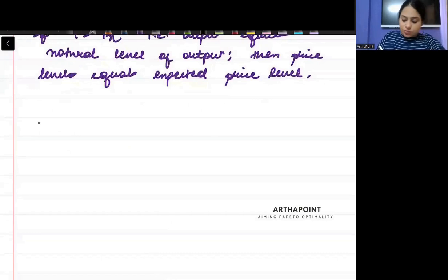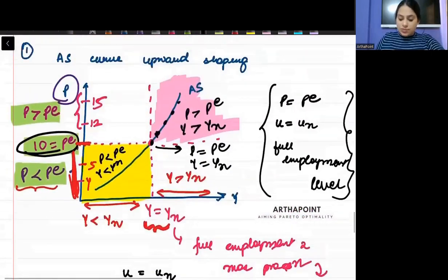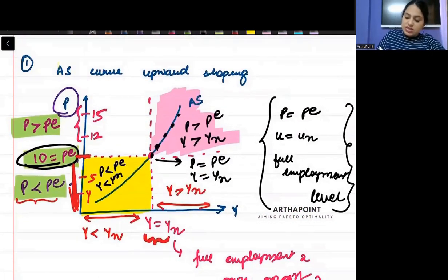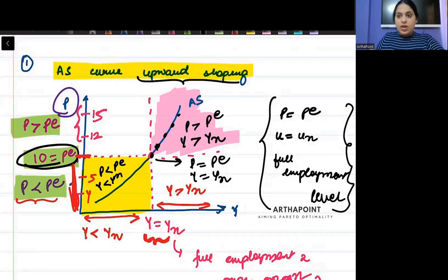Now, second thing. Now I want to understand what is the role of price expectation. This diagram that I have shown, this is an AS curve. An AS curve is upward sloping. Whatever points come on the X axis or Y axis, those points tell you the movement around the curve.